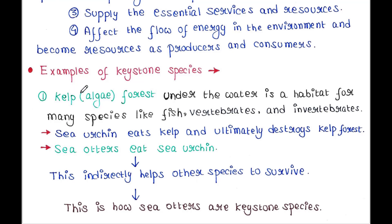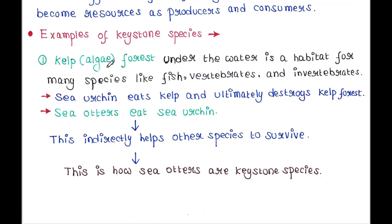The first example is kelp. Kelp is an algae that forms forests under the water, which are habitats for many species like fish, vertebrates, and invertebrates. Sea urchins eat kelp and ultimately destroy kelp forests. Sea otters eat sea urchins, which indirectly helps other species to survive. Since kelp survives, other species also survive — this is how sea otters are keystone species.